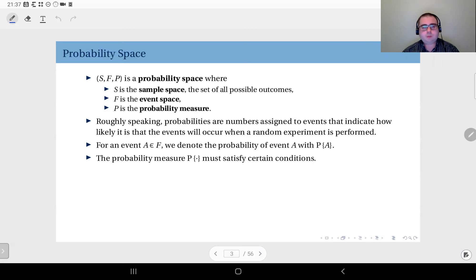To start with, we have a couple of definitions here. The structure consisting of these three components S, F, and P is called the probability space, where S is the sample space, which is essentially a set consisting of all possible outcomes regarding a random experiment. F is the event space, again a set consisting of all possible events. In discrete probability, this is a subset of the power set of the sample space.